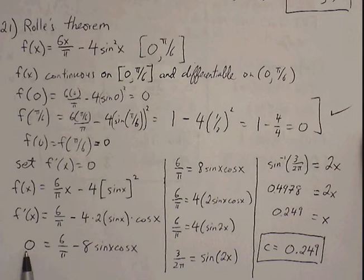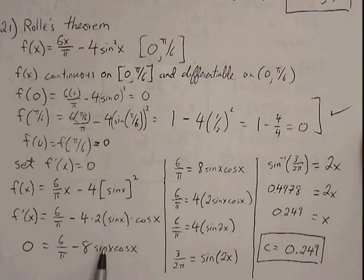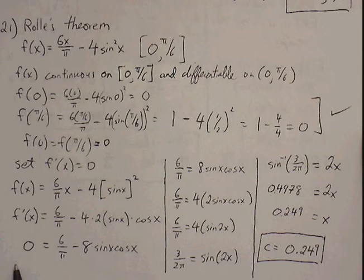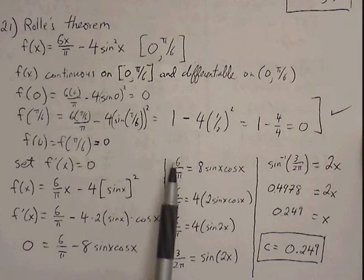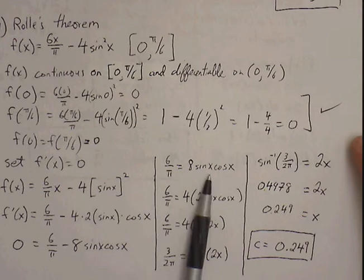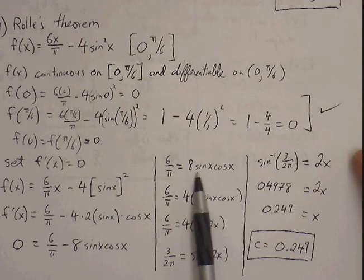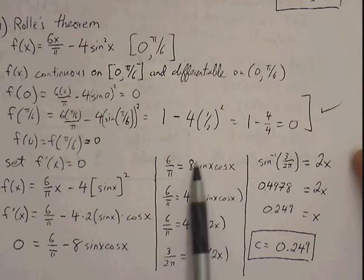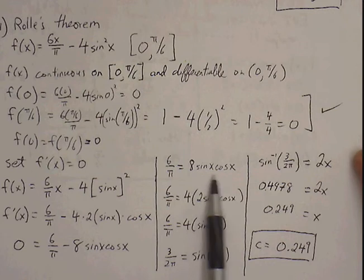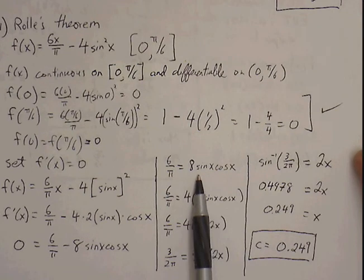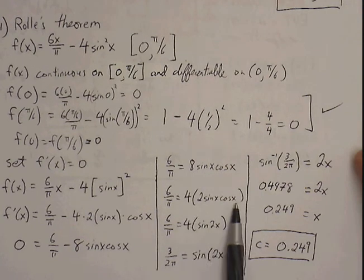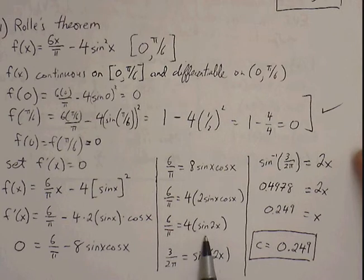We set our derivative equal to 0 and solve for x. Moving 6 over pi to the left and dividing by negative 1, we get 6 over pi equals 8 sine of x cosine of x. We can use the double angle formula to simplify — pulling out a 4 gives us 4 times 2 sine of x cosine of x, which can be rewritten as 4 sine of 2x. Our goal is to try to solve for x.